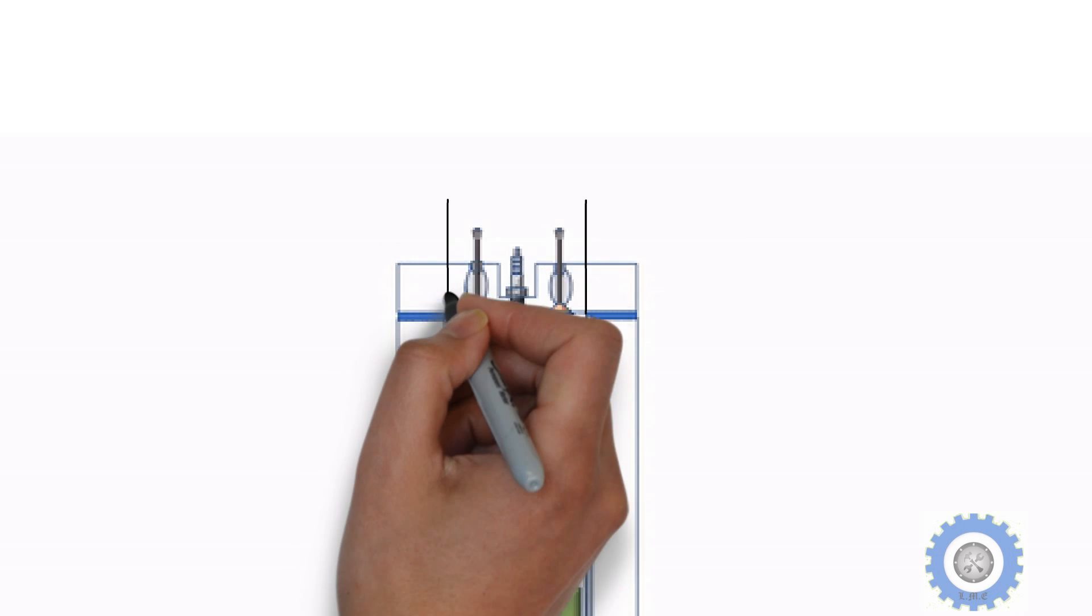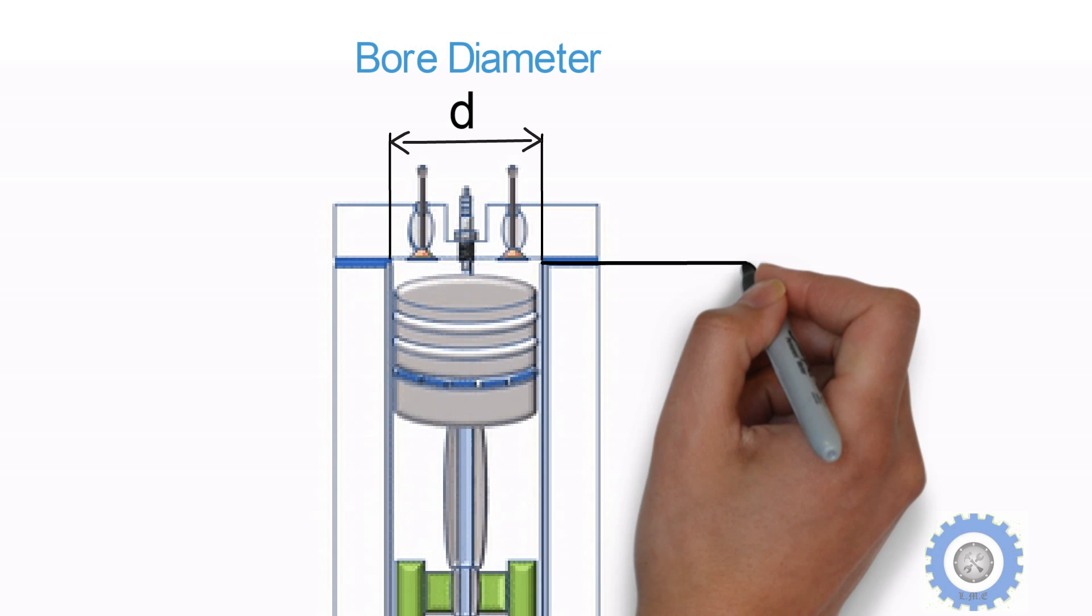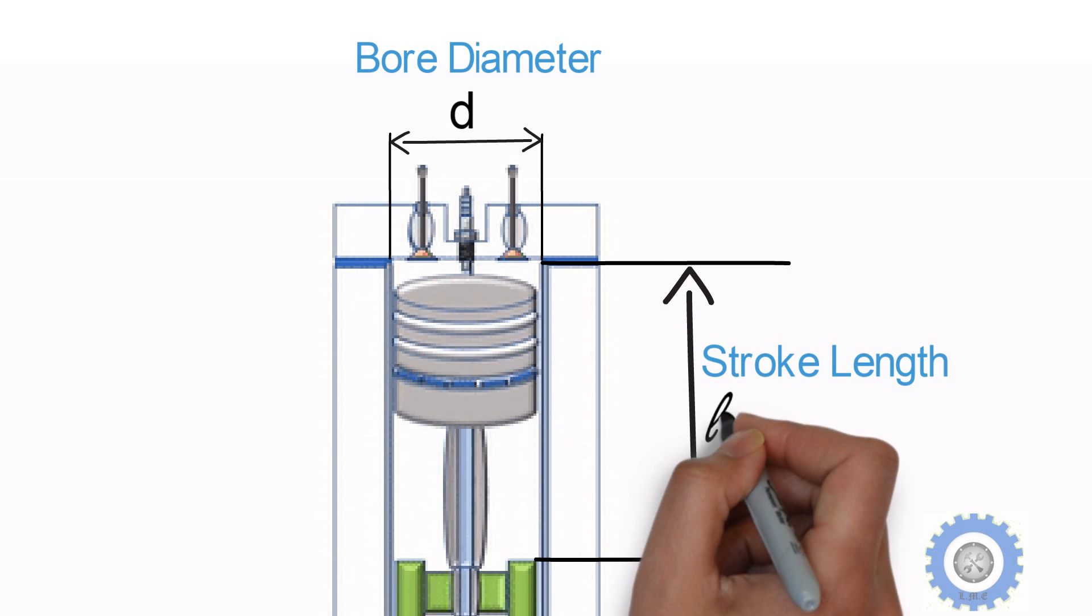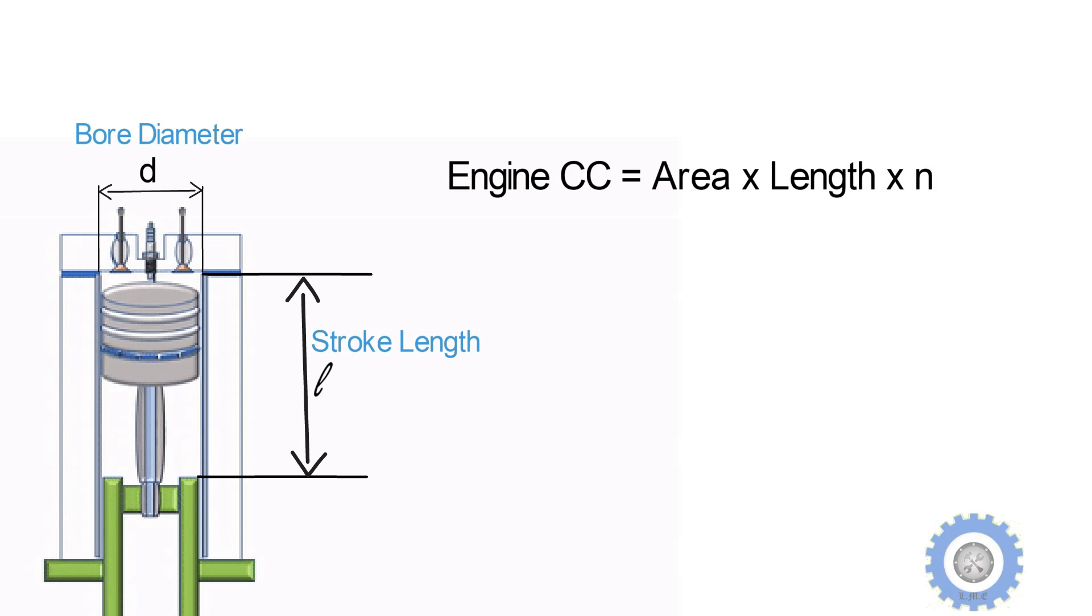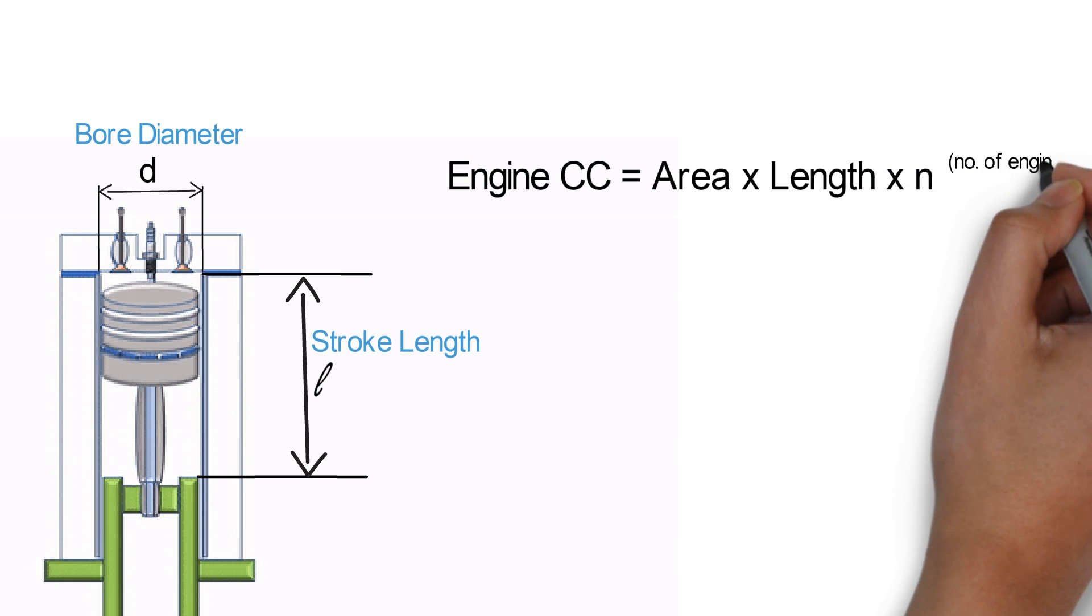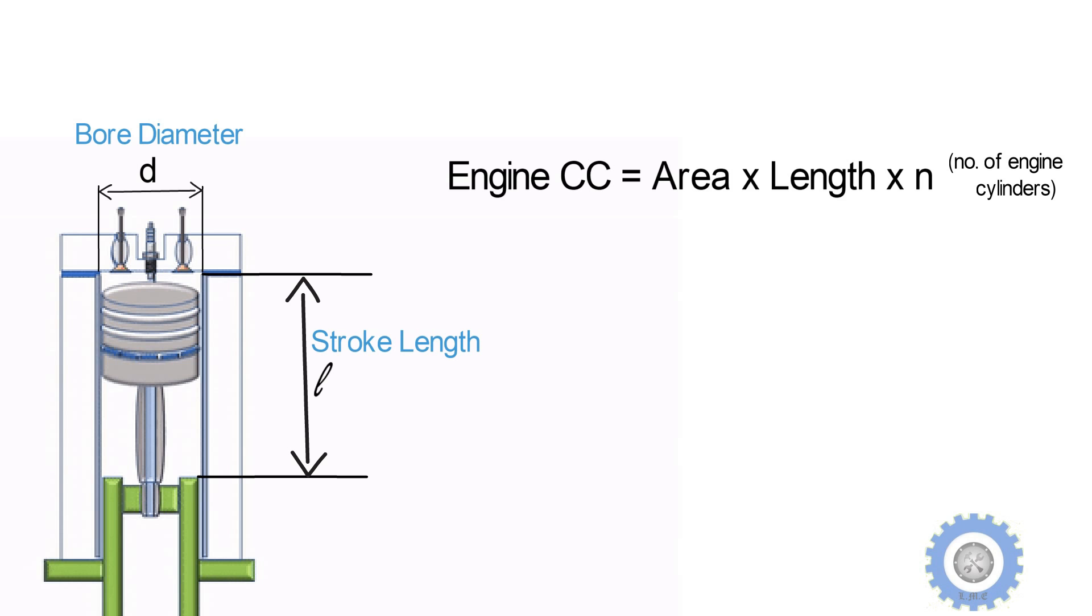Okay so now, how do we calculate this engine cc? To calculate the volume of the engine cc, we have to multiply the bore area of a cylinder by the stroke length, and then multiply that by the number of engine cylinders of an internal combustion engine.